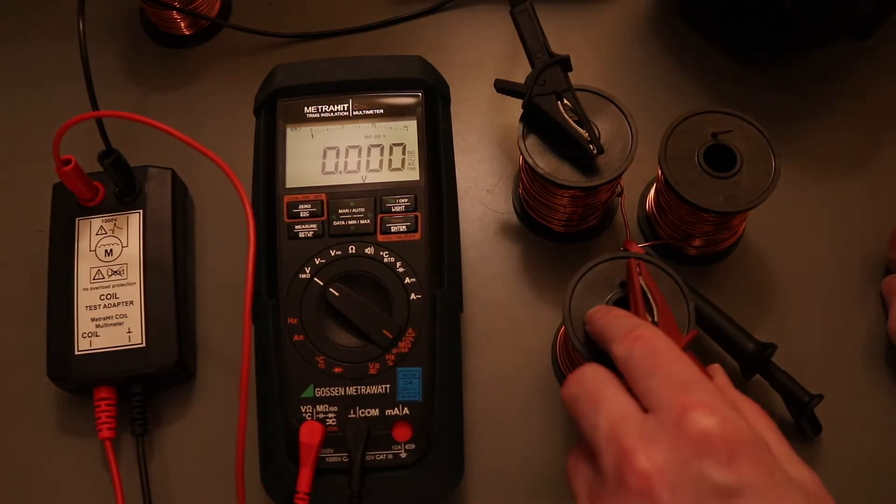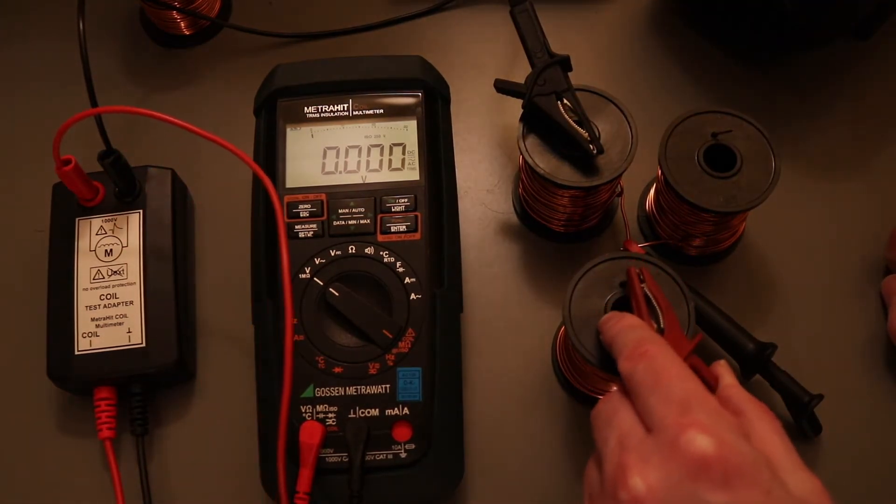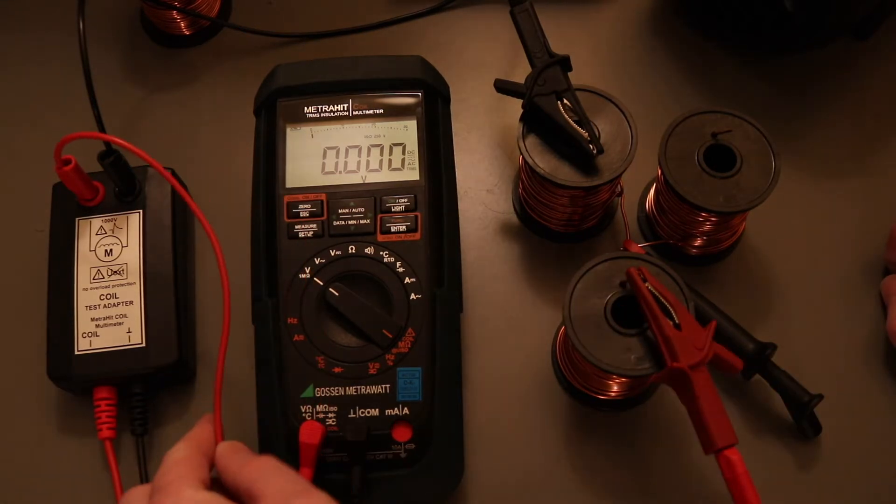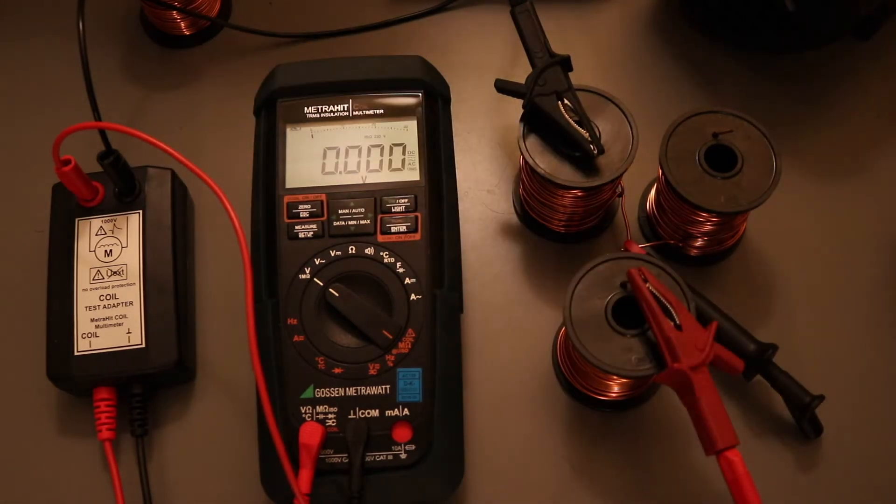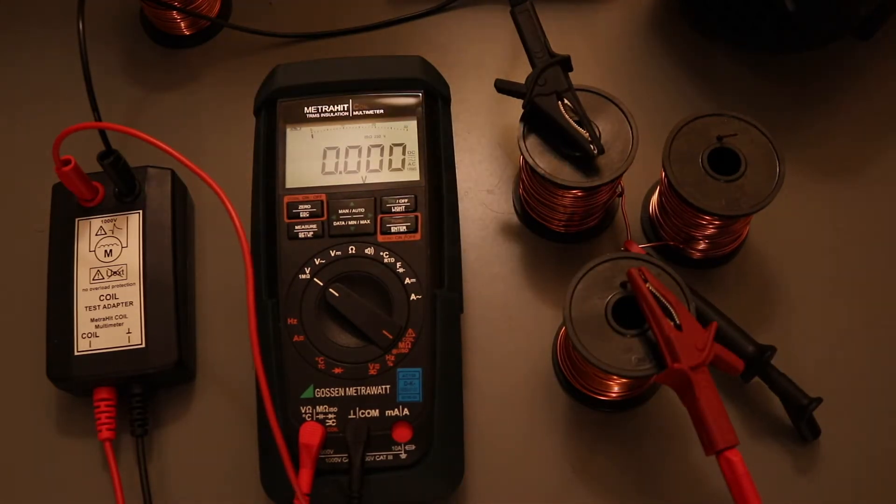So what I do have is a set of coils of wire that I was winding some coils with. So these are actually full rolls at the moment. I also have a slightly smaller roll there as well. So I can demo the coil test function with these three coils of wire.